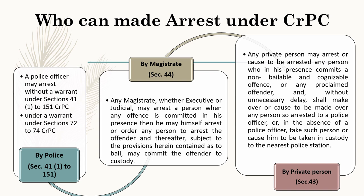Section 43 defines that arrest can be made by a private person. Any private person may arrest or cause to be arrested any person who in his presence commits a non-bailable and cognizable offense, or any proclaimed offender, and without unnecessary delay shall make over any person so arrested to a police officer, or in the absence of a police officer, take such person or cause him to be taken in custody to the nearest police station.